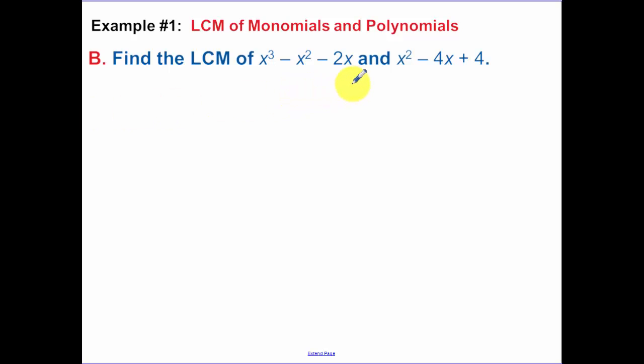Next example. You have to factor each one of these. So x to the 3rd minus x squared minus 2x. Remember that what you want to do first is always factor out the common multiple that's in each one. So then I have x squared minus x minus 2, and that again factors to x minus 2, x plus 1. This other one, x squared minus 4x plus 4. That's a perfect square trinomial. So that's going to be x minus 2 times x minus 2.